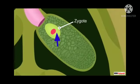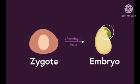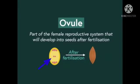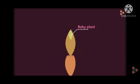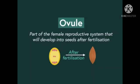Each fertilized ovule contains a zygote. The zygote then begins to divide and forms an embryo. The embryo contains one or two cotyledons which store food for the future. The fertilized and developed ovule containing an embryo, or baby plant, is called a seed.